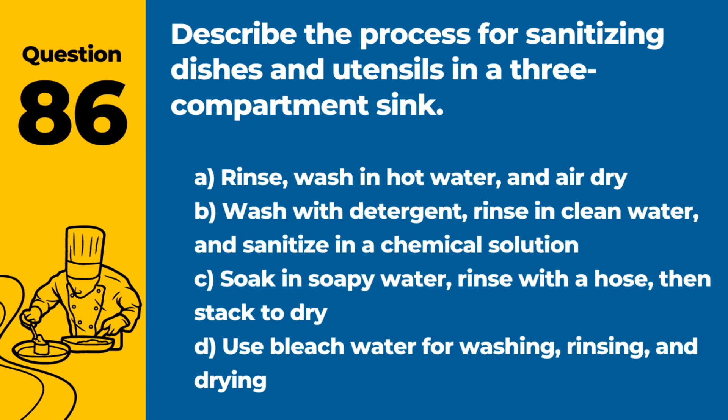Question 86. Describe the process for sanitizing dishes and utensils in a three-compartment sink. Answer: B. Wash with detergent, rinse in clean water, and sanitize in a chemical solution. This method ensures that dishes and utensils are properly cleaned and sanitized.